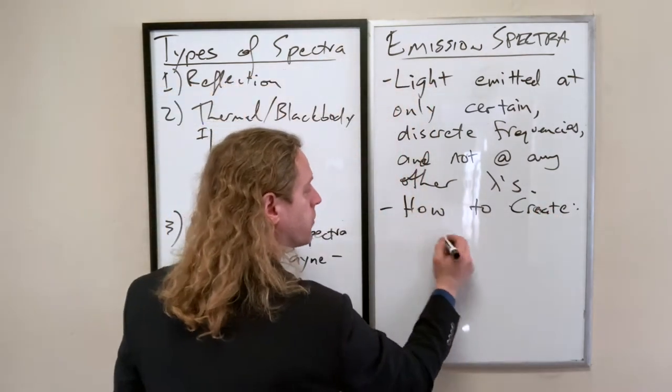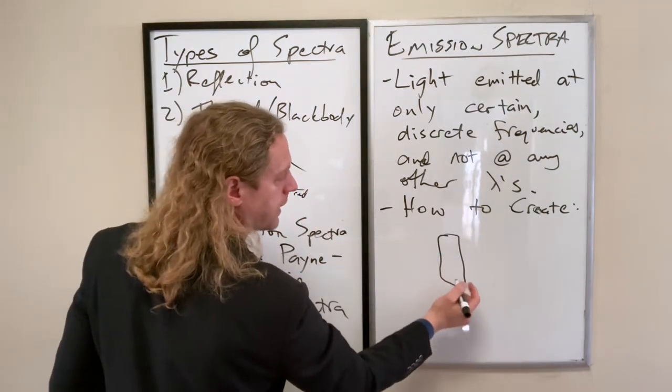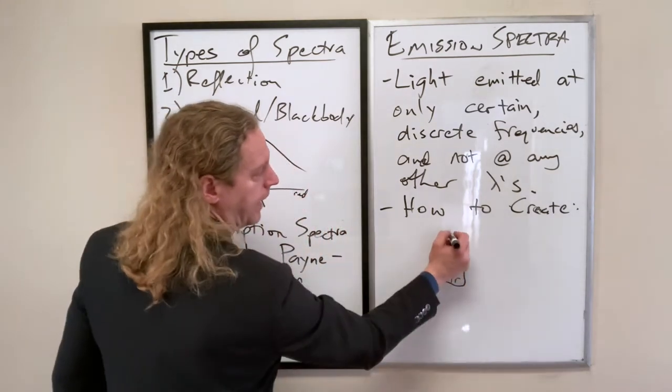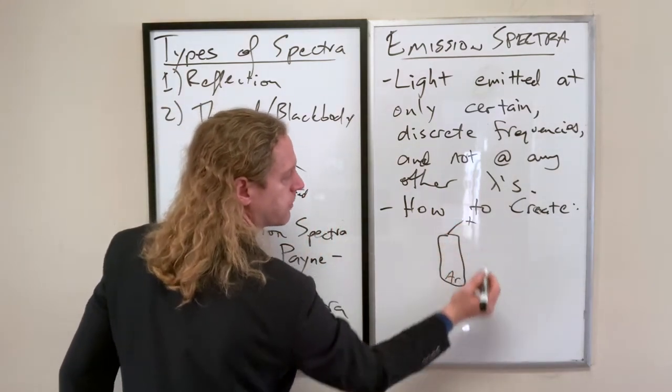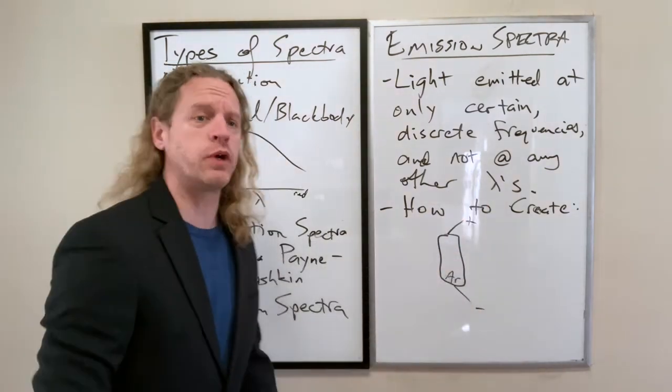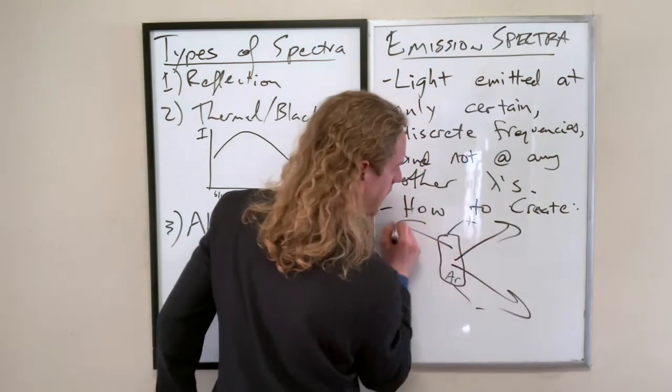So all you do is you take a chamber, an enclosed chamber of some sort of gas, and let's just consider, let's say, argon gas, and you attach one side to a positive terminal, you attach one side to a negative, and when you ramp up the voltage between them enough, all of a sudden you start getting out light of a variety of different wavelengths.